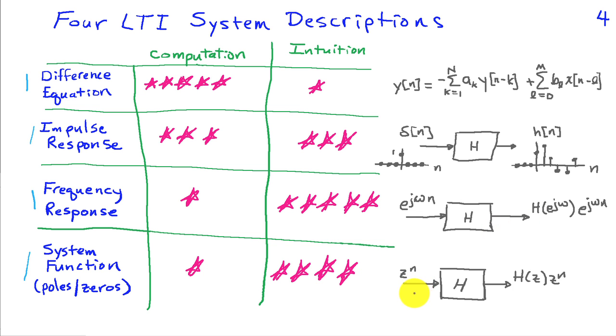The system function, or the poles and zeros of the system, are obtained by considering a slightly more general input than a complex sinusoid. It's just some complex number z raised to the nth power. It turns out that if I put such an input into a linear time and variant system, the output is also the same complex number z raised to the nth power but modified by the system function h of z. This could change the amplitude and phase. This may be the most abstract of these four descriptions, but nevertheless it also provides some very useful insight.